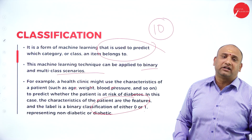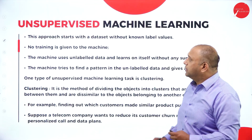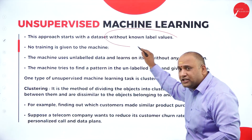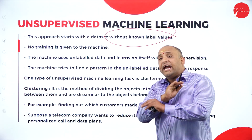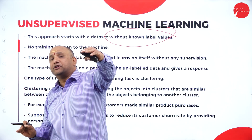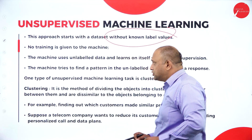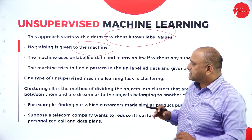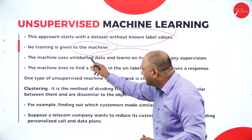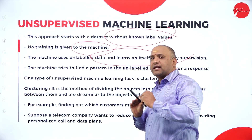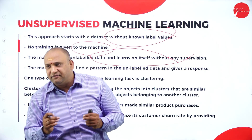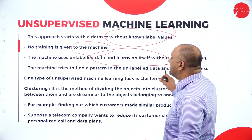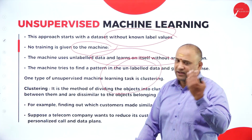The unsupervised method works without known variables — that is the most important distinction. Without known variables, you are in the unsupervised domain. No training is given to the machine. The machine has unlabeled data and learns by itself without any supervision — it is self-motivated, self-driven, and self-objective oriented. The machine is able to run the dataset by itself.